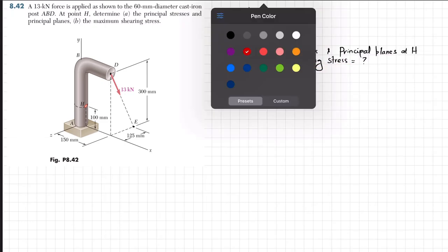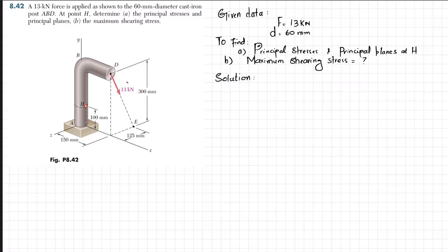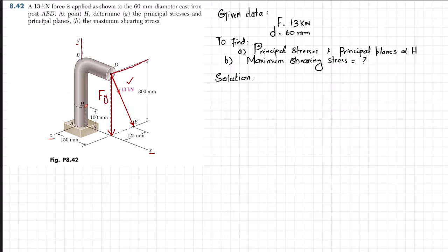The vertical axis is the y-axis, the horizontal axis is x, and the other is z. The 13 kilonewton load is applied in the DE direction, so it will have two components: one along the y-axis (Fy) and one along the z-axis (Fz). There is no x-component, so Fx equals zero.